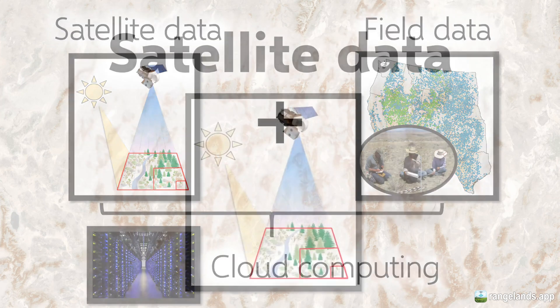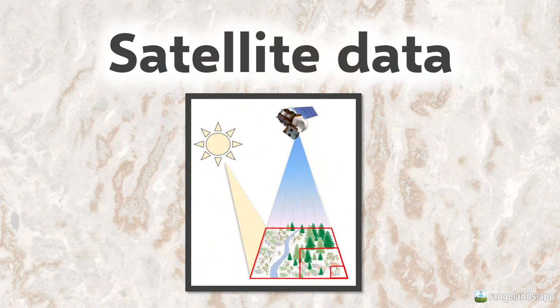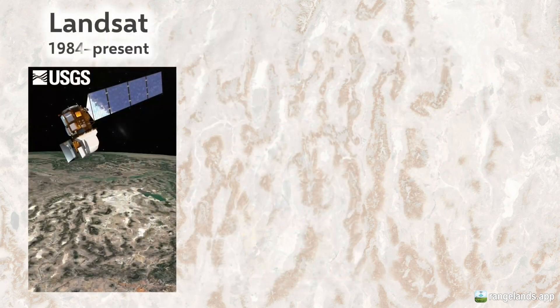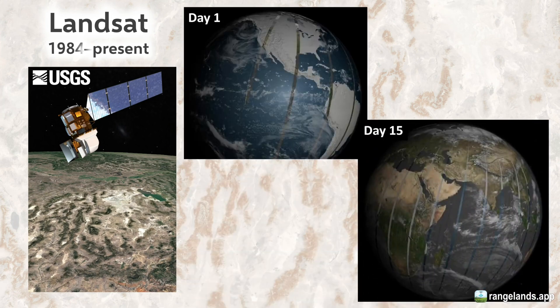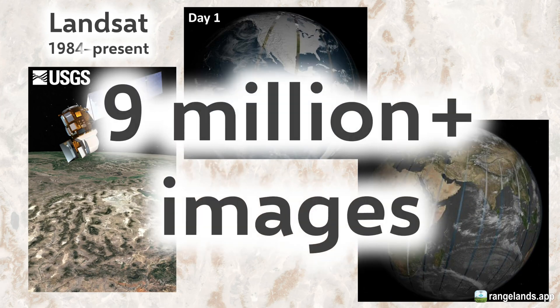Let's look at the satellite data. Our satellite data come from the Landsat program, which is a joint program between the U.S. Geological Survey and NASA, and has been surveying the Earth for more than 36 years. It covers the globe every 16 days, and you can see what these coverages look like on day one and day 15 of any cycle. Last September, they surpassed 9 million images in the Landsat archive.